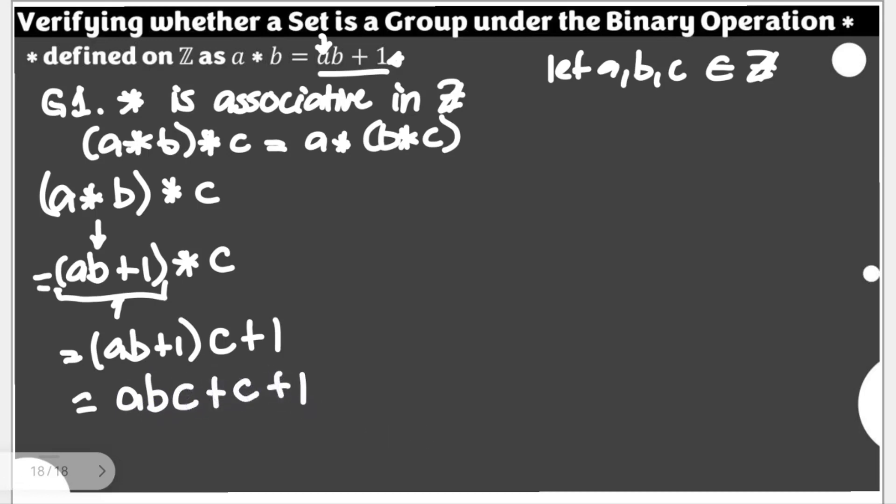Let's find out if the second side, A star B star C, is also equal to that. But of course, here, we'll be starting with B and C. There will be those two elements that will be multiplied, then added with 1. So you have A star BC plus 1.